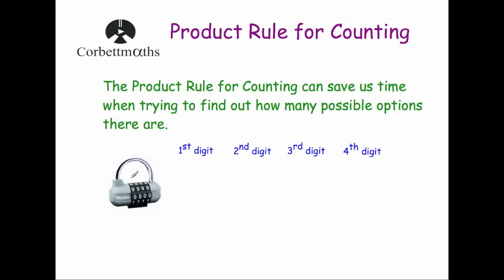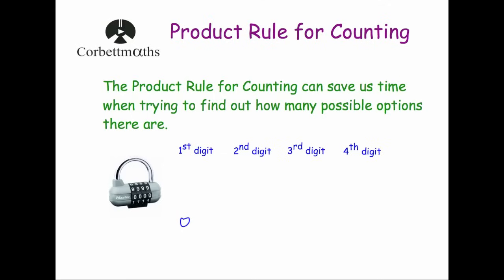One technique for something simple like this is to consider the range of numbers. The smallest number is 0000 and the largest is 9999. Altogether there'd be 10,000 combinations — from 0001 to 9999, plus 0000, making 0000 the 10,000th combination. Another way to do this is to use the product rule for counting.